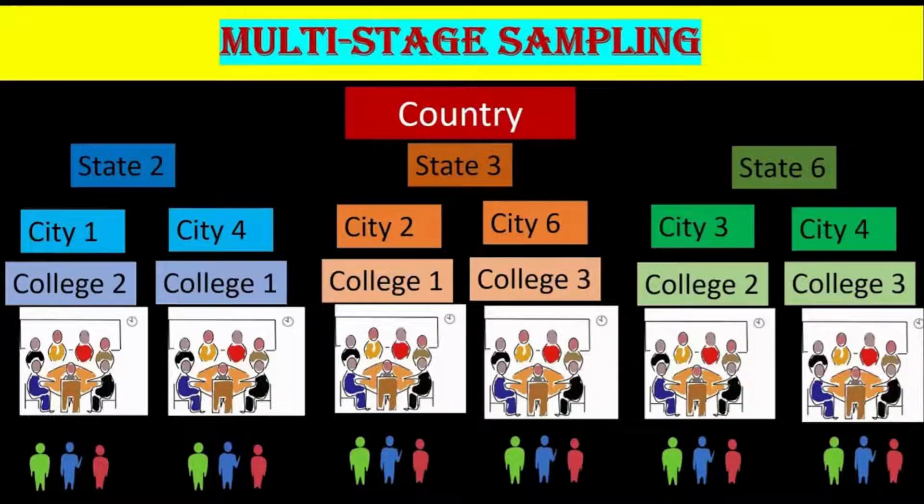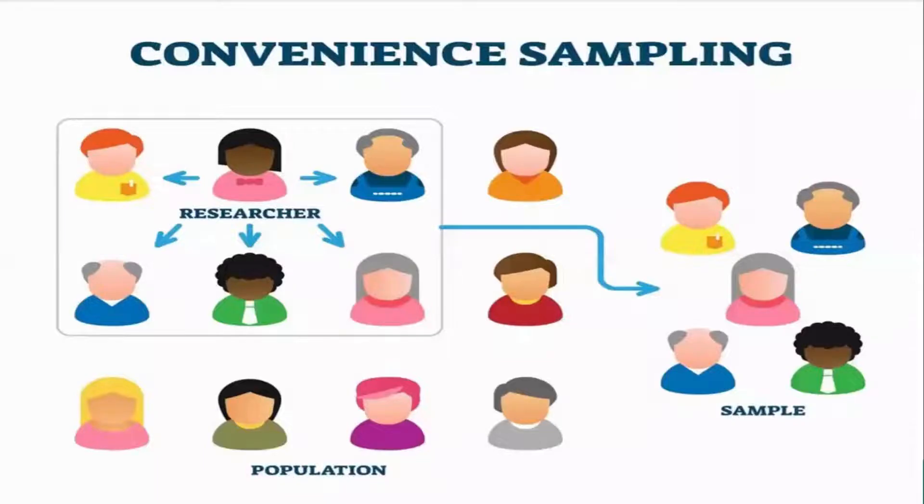These methods can be extended to three or more stages, hence it is called multi-stage sampling. Sometimes, a sample is seemingly hard to obtain. In cases like this, some researchers resort to obtaining samples which are easily accessible. This type of sample is called convenience sampling because the sample is convenient to obtain.